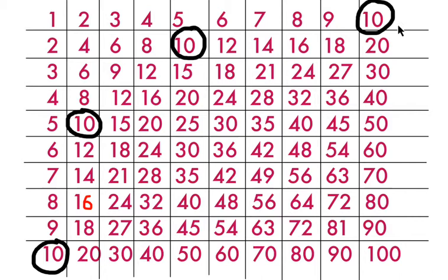Number 10 comes in 1's table, 2's table, 5's table and 10's table. So number 10 is the multiple of 1, 2, 5 and 10.